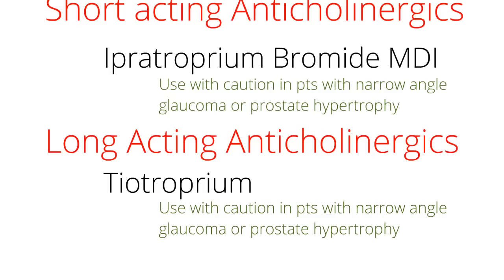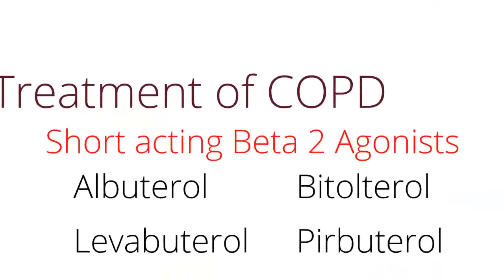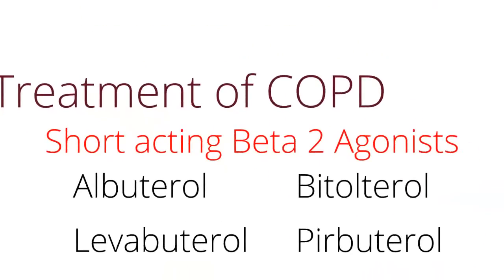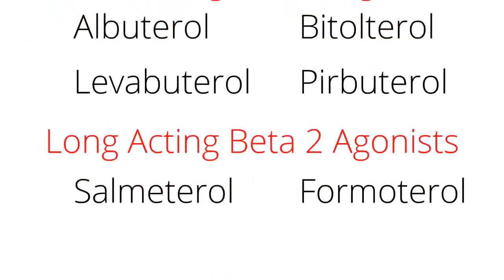Next, let's look at beta-2 agonists available for COPD patients. Short-acting beta-2 agonists include albuterol, levalbuterol, bitolterol, and pirbuterol. In addition, we also have long-acting beta-2 agonists available: salmeterol and formoterol.